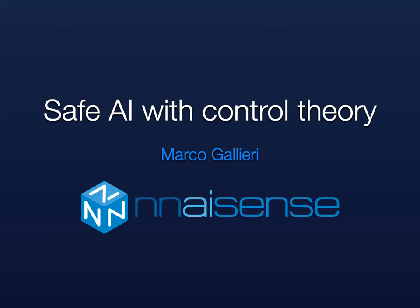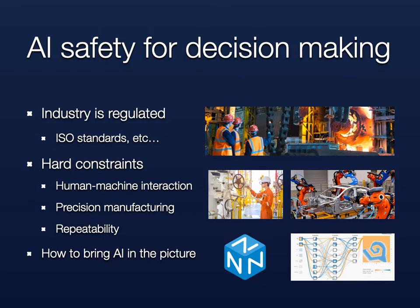This talk is a summary of recent research performed at Nascence on the topic of safe artificial intelligence using control theory. We are interested in bringing artificial intelligence into production lines and industrial scenarios. These are regulated by international standards and present challenges addressed by control engineers, such as operational constraints and requirements for high repeatability and precision.